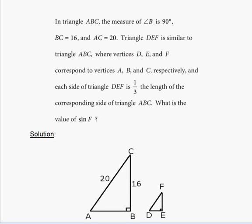The official new SAT study guide, practice test 3, section 3, problem number 20, no calculator. In triangle ABC, the measure of angle B is 90 degrees, BC is equal to 16, and AC is equal to 20. Triangle DEF is similar to triangle ABC, where vertices D, E, and F correspond to vertices A, B, and C respectively, and each side of triangle DEF is one-third the length of the corresponding side of triangle ABC.